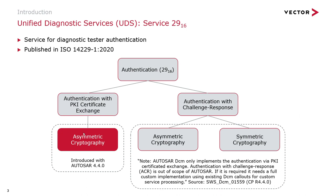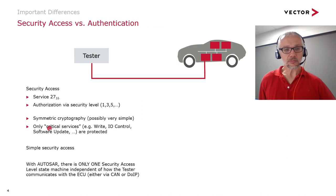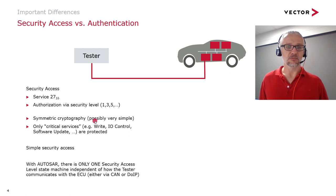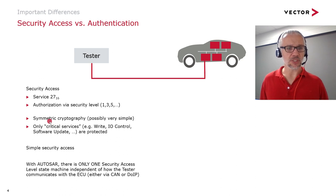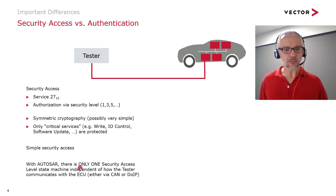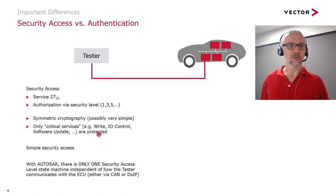We've been focusing on the PKI approach because this is what's possible in AUTOSAR, and I showed you with an AUTOSAR-based ECU running in a virtual environment what we can do. We were able to compare security access, where we have relatively simple cryptography and the concept of only having critical services protected, with simple security access. There is also the point that within AUTOSAR's older security access service, there is only one security access state machine, independent of connection.